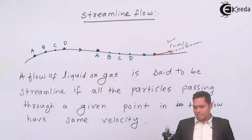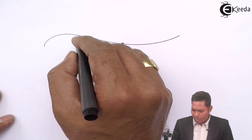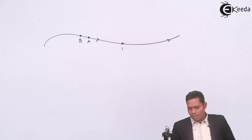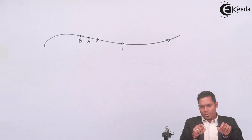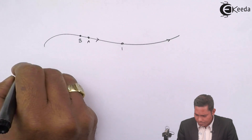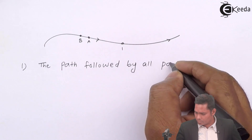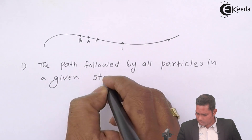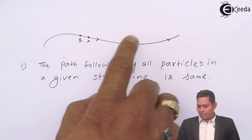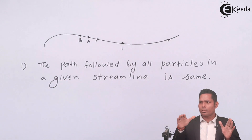Now, if this is a streamlined flow, consider a point with two particles A and B moving in this direction, following a certain path. A is here, B is there — they have to follow a certain path, and B also has to follow the same path. The path followed by all particles in a given streamline must be the same. Any number of particles coming will also follow the same path. That is the first property.